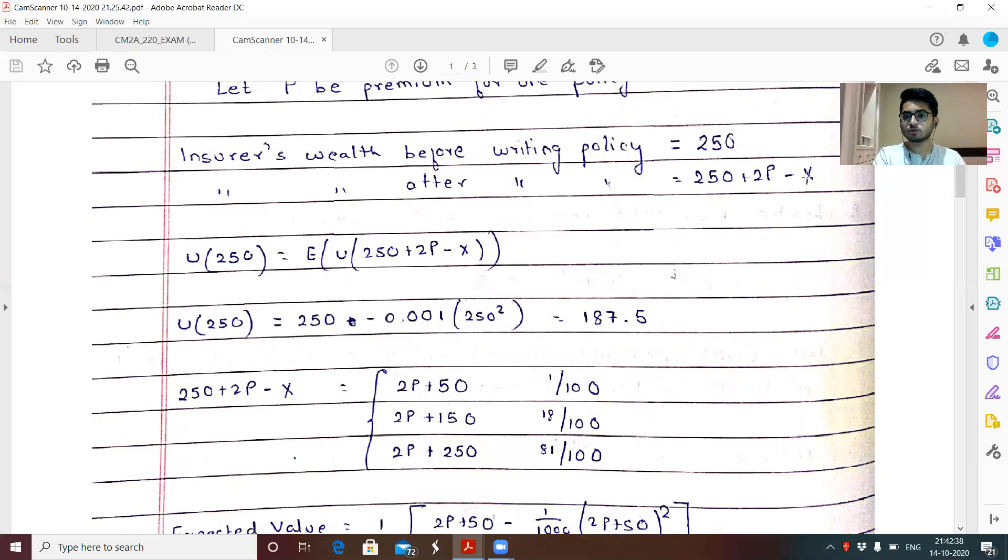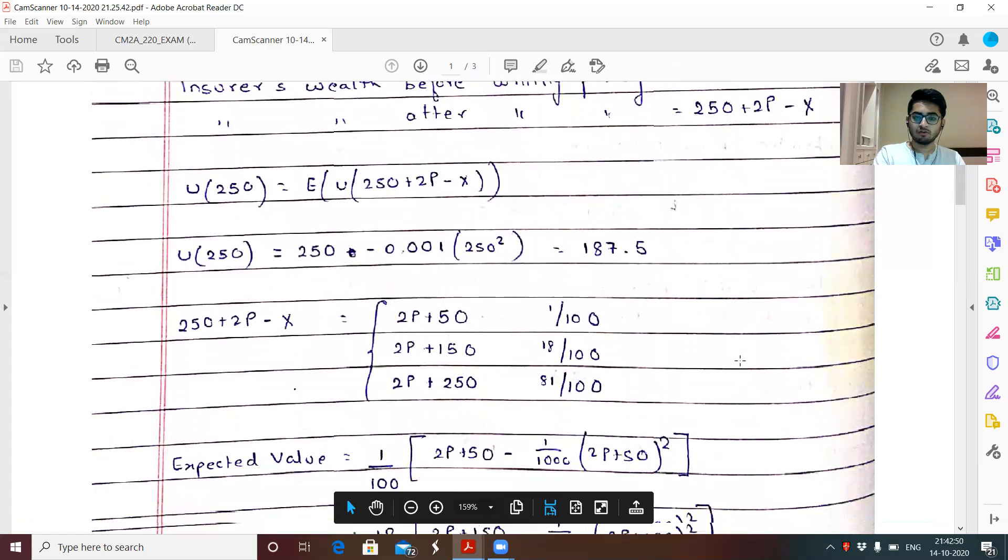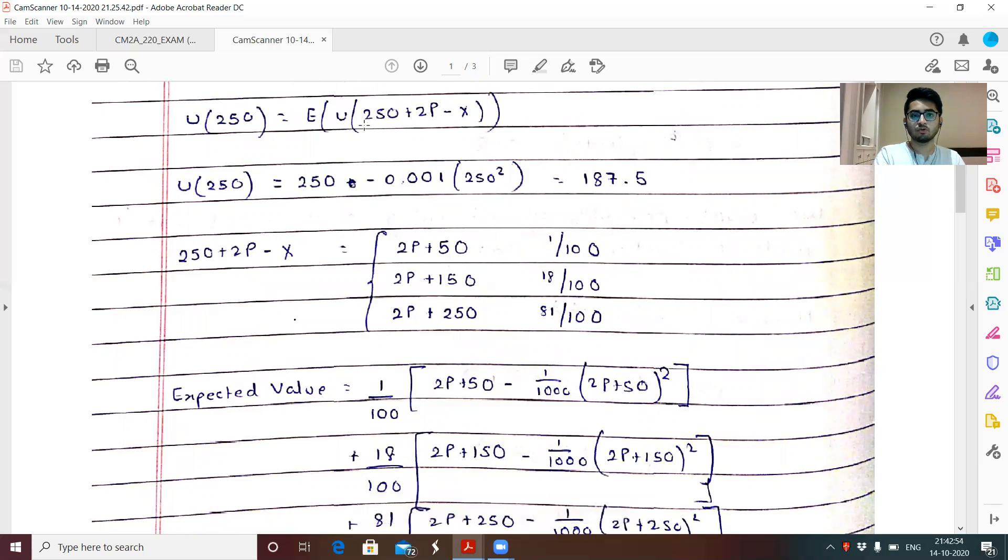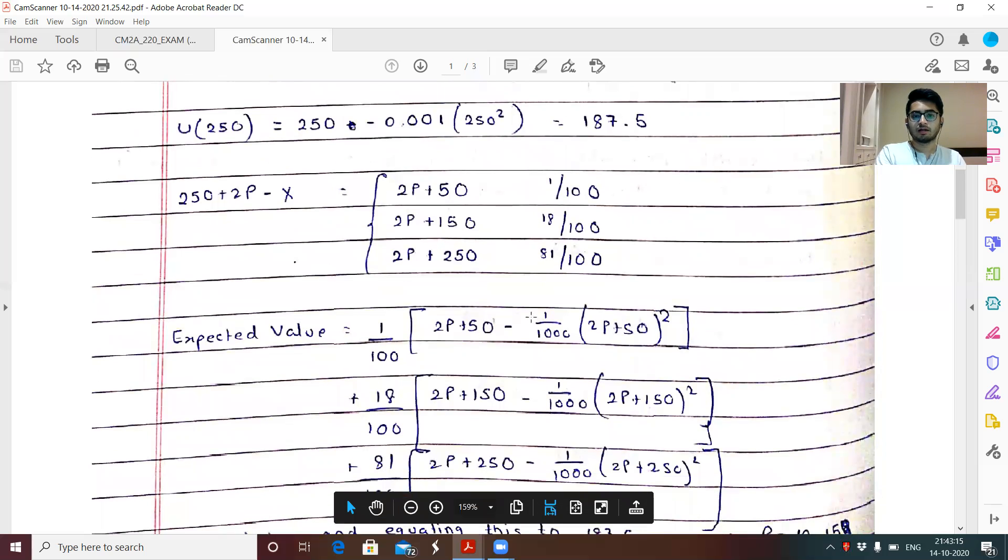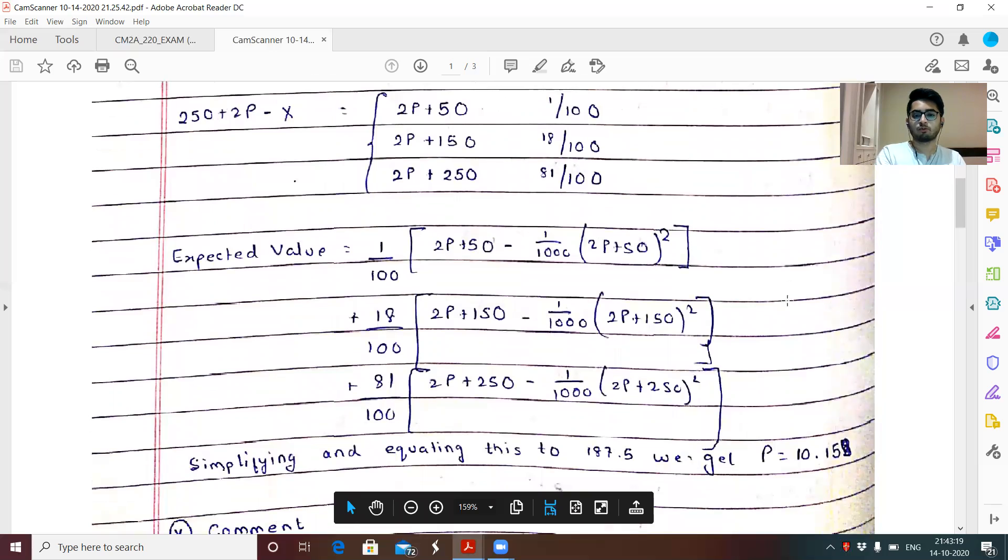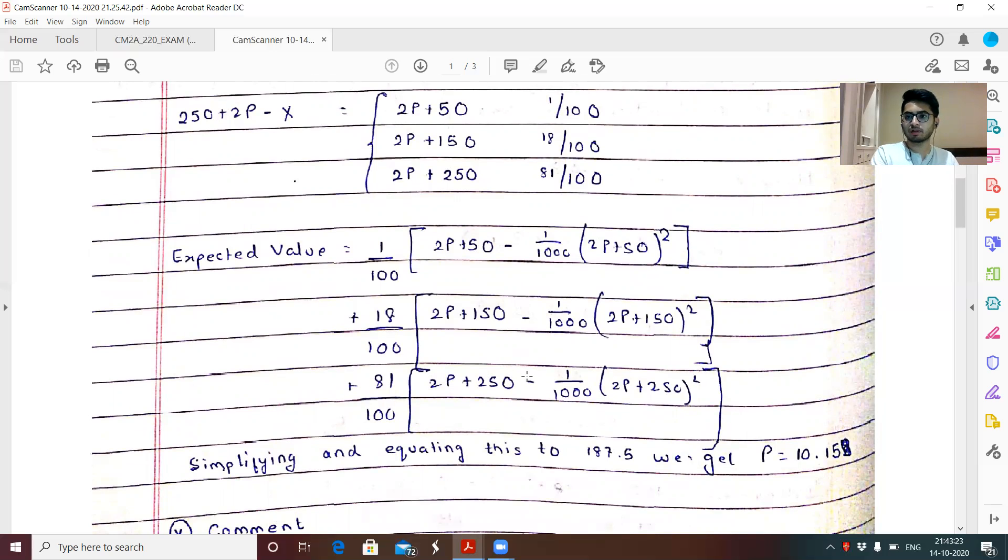So before writing this policy, that is before selling this policy or entering into this contract, the insurer's wealth was 250. After entering it, it would have 250. It would receive two premiums in a year from two contracts and let X be the total claim amount random variable. So this is the total wealth which the insurer would have. And now obviously this is a random variable since we have X here, which is a random variable. So to find the premium which the insurance company should charge, U of 250 should be expected value of utility of 250 plus 2P minus X. Now U 250 is basically W minus DW square. D is given to be minus 0.001. You can also write this as 1 by 1000. So this comes out to be 187.5. This entire thing comes out to be 250 plus 2P minus X. So W minus DW square. 1 by 100 is the probability that W takes this value. 18 by 100 is the probability that W takes this value and 81 by 100 is the probability that W takes this value 2P plus 250. So I haven't really given the entire solution for it. It took me around a page or so to do it. Simplifying and equating this to 187.5, we get premium to be 10.15, correct up to two decimal places.